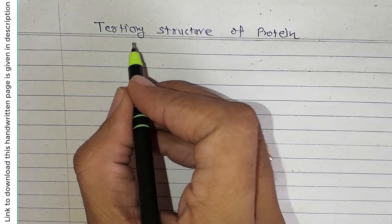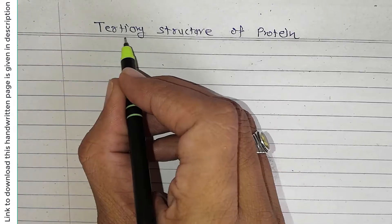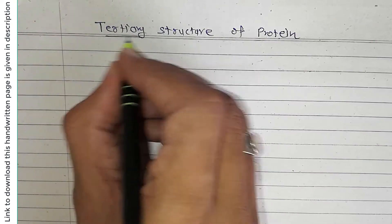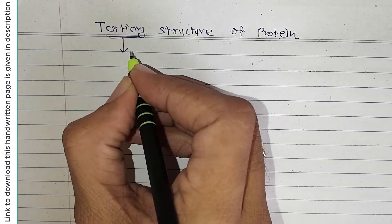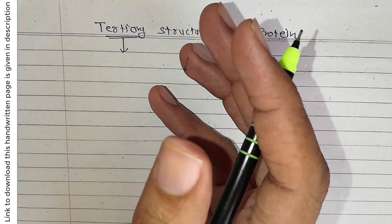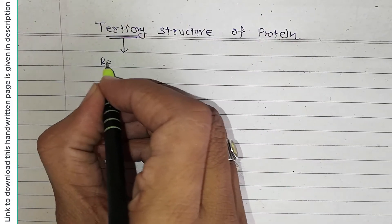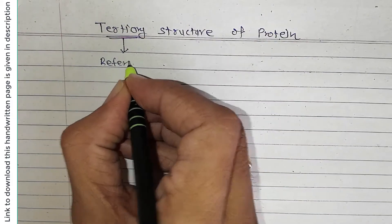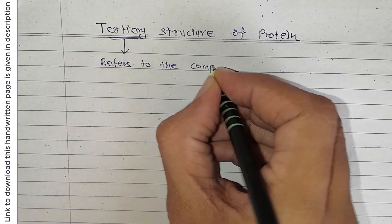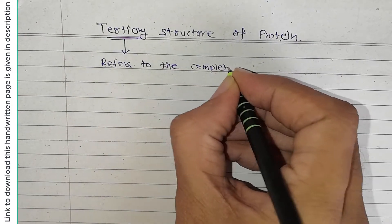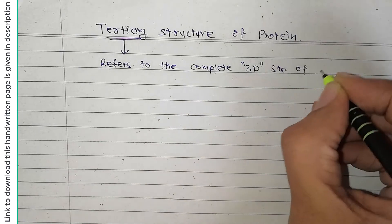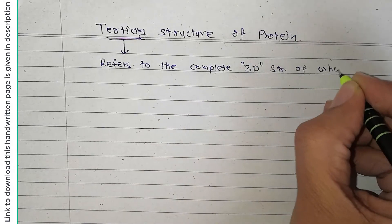In this video tutorial, I am going to discuss the tertiary structure of protein. The tertiary structure refers to the complete three-dimensional structure of a whole polypeptide chain.